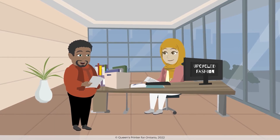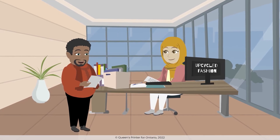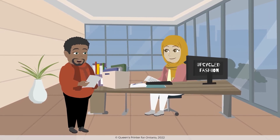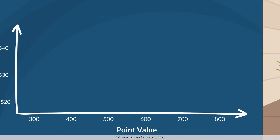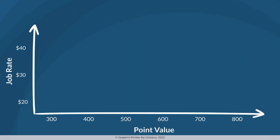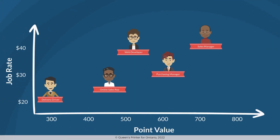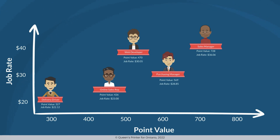So what happens after we select all the male job classes? The toolkit calculates what our female job classes should be paid relative to our male job classes. Imagine a graph where our male job classes are placed based on their point value from step 3 and their job rate from step 4.